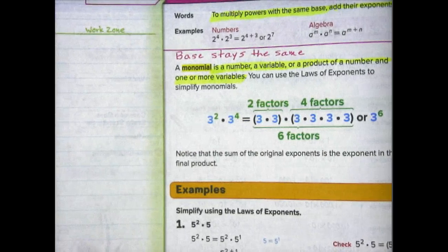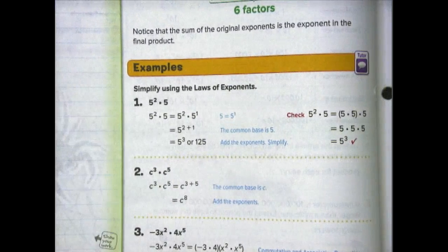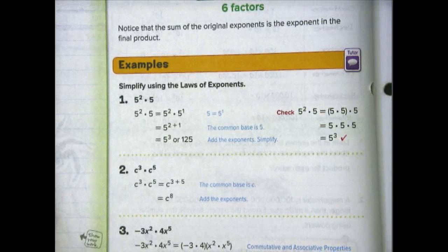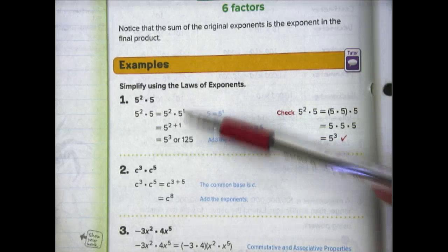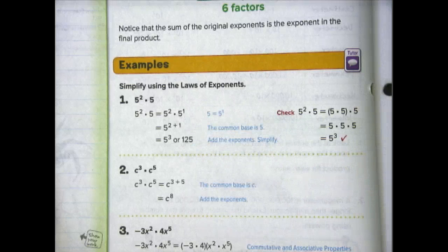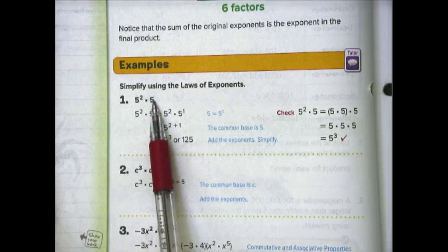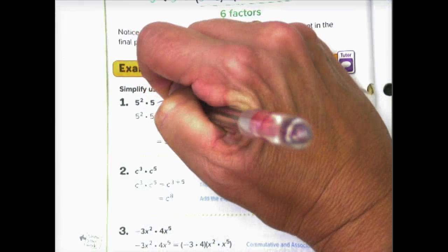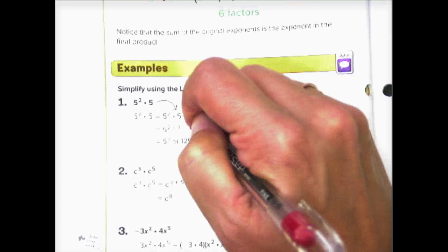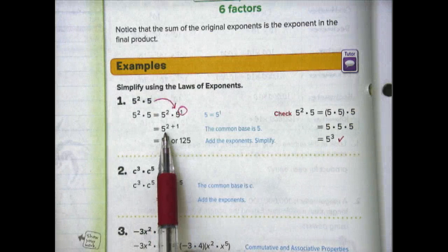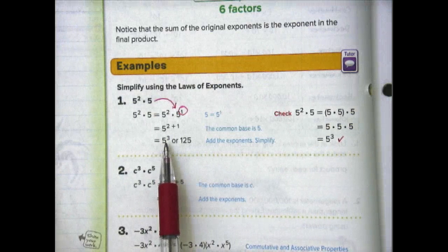Let's look at some examples — simplify using the laws of exponents. Examples 1 and 2 are similar to ones we've already worked in our math minutes. The key point with number 1 is that 5 to the 2nd power times 5 times 5 — remember that 5 is the same as 5 to the 1st power, so don't forget that exponent of 1. It would be 5 to the 2 plus 1 power, or 5 to the 3rd.